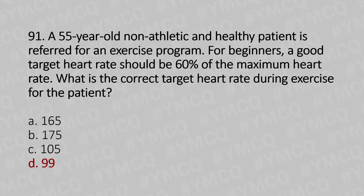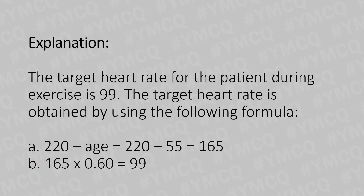The target heart rate of the patient during exercise is 99. The target heart rate is obtained using the formula 220 minus age: 220 minus 55 equals 165, and 165 multiplied by 0.60 (that's 60%) equals 99.